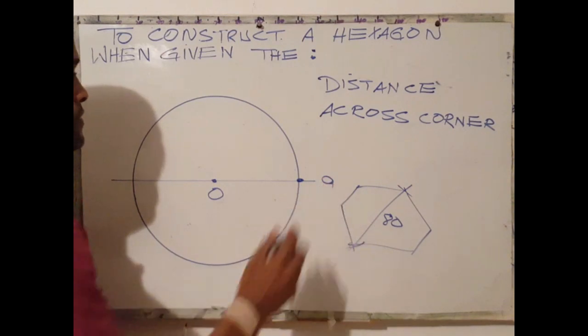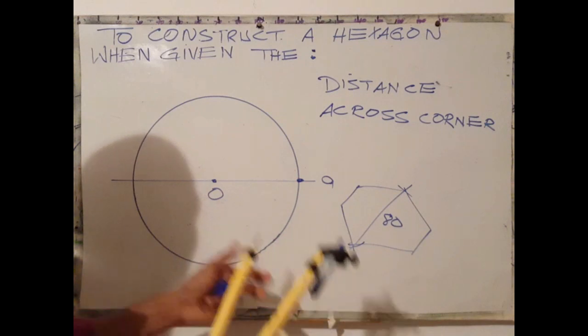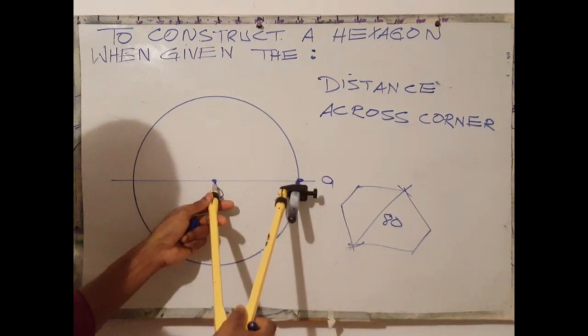At the point where the circle meets the horizontal line, label the point to the right A. That will be our starting point.